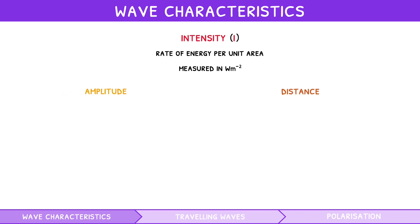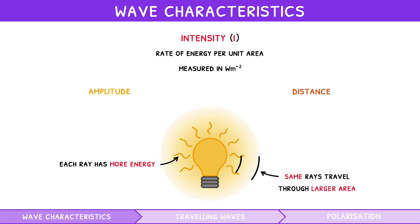Let's start by looking at amplitude and distance. Imagine a lightbulb in the dark. If you pass more power through the lightbulb, the light intensity increases as each ray now has more energy. However, as you move further away from the lightbulb, the light intensity exponentially decreases, because the same number of rays travel through an exponentially larger area. Therefore, the intensity of a wave is proportional to its amplitude squared, and inversely proportional to the square of the distance from the source, termed the inverse square law.